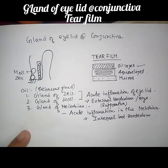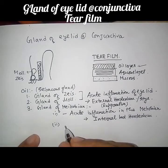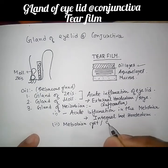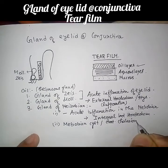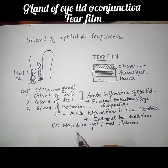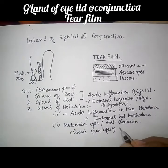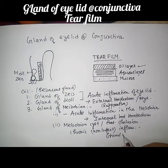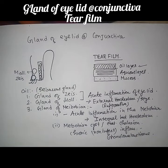Another clinical condition involving the Meibomian gland is a Meibomian cyst, also known as a chalazion. A chalazion is not a true cyst but rather a chronic, non-infective inflammation leading to the formation of granulomatous tissue.